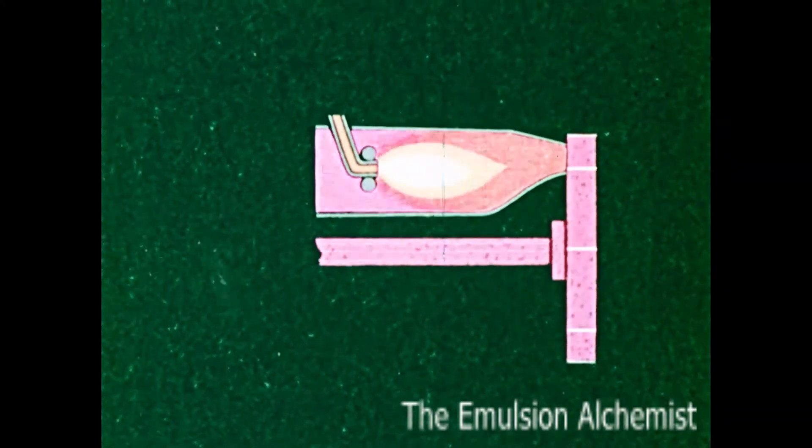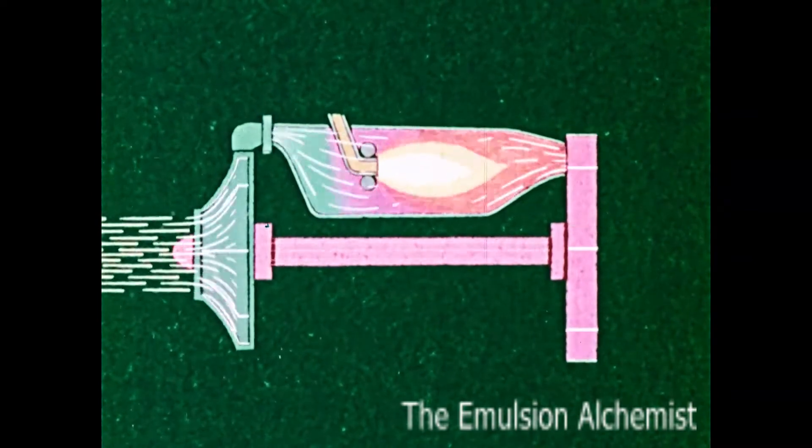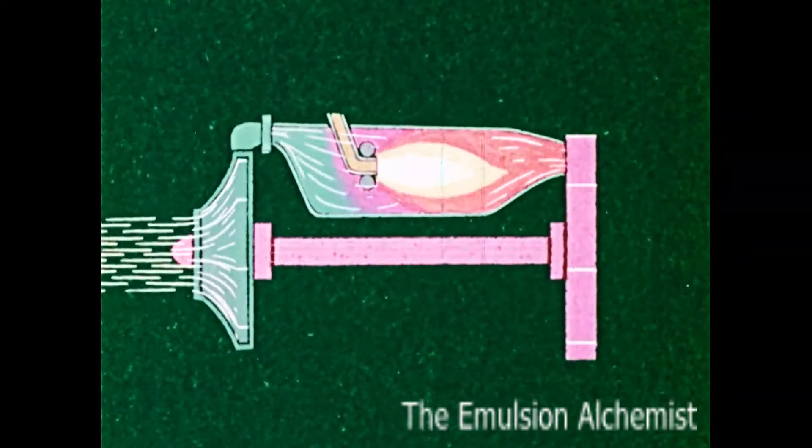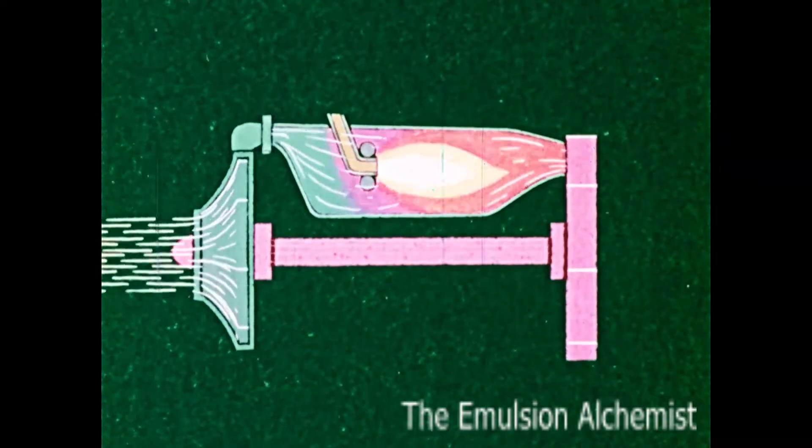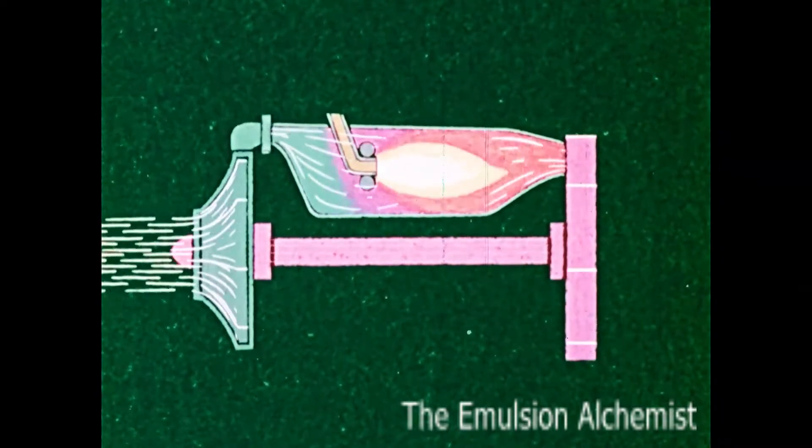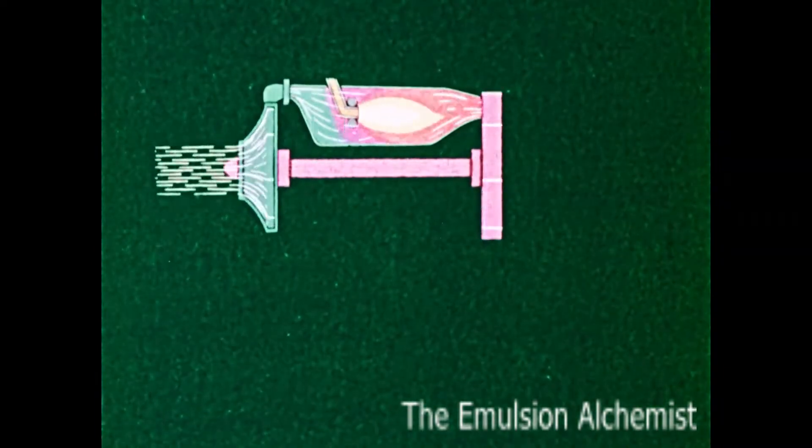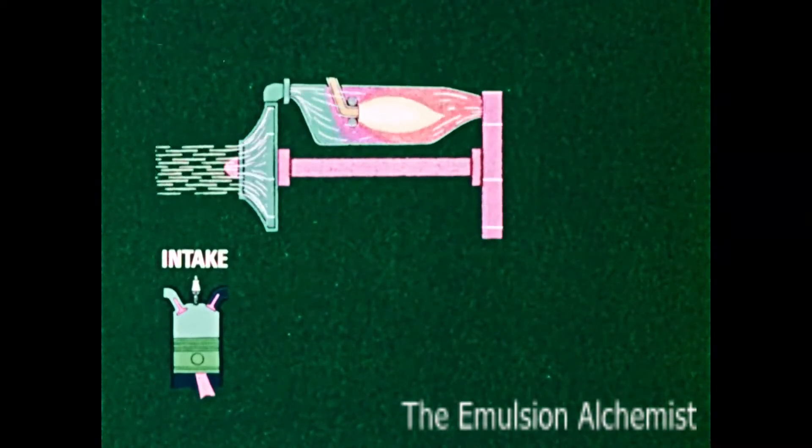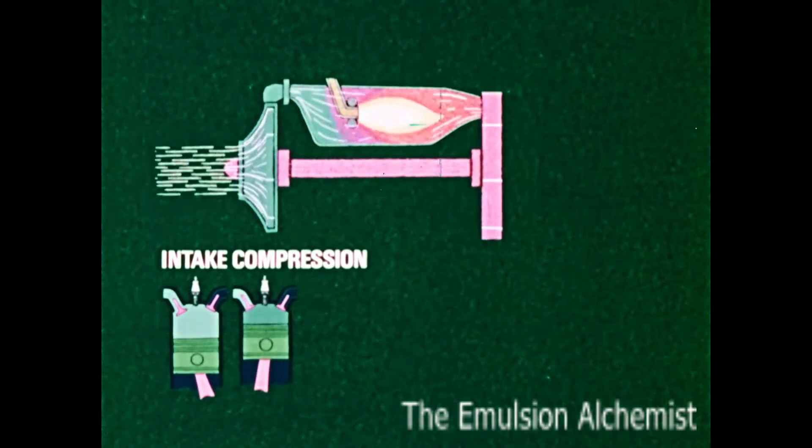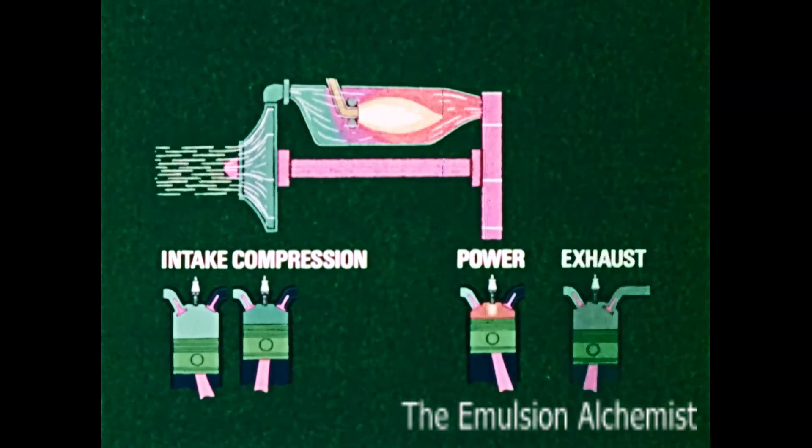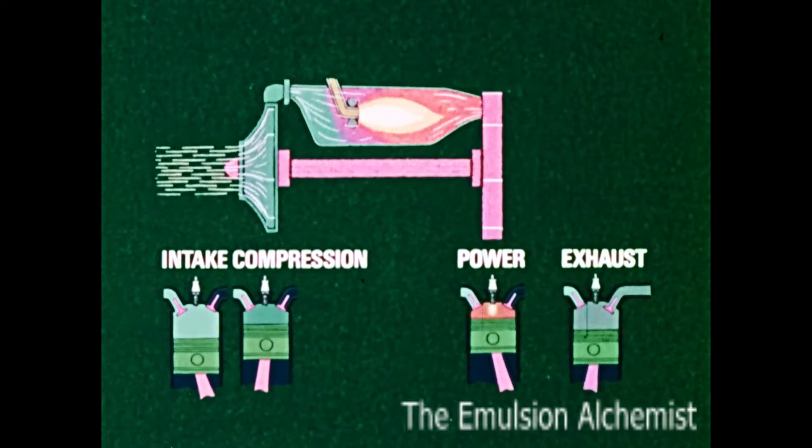The turbine shaft turns a compressor, a bladed wheel air pump that supplies the large quantity of air the engine uses in developing its power or thrust. As in a piston engine, the process begins with the intake of air, then compression, power, and exhaust. In the gas turbine, they all occur continuously.